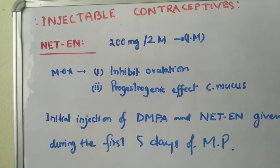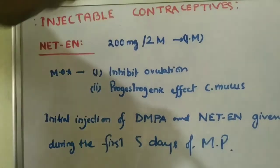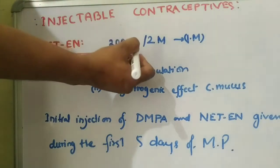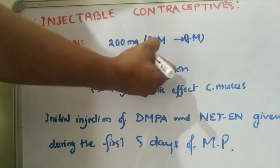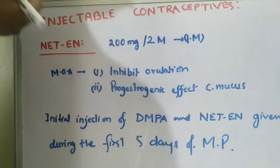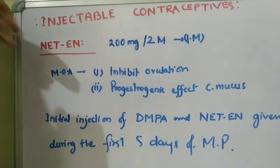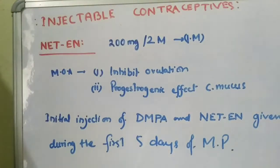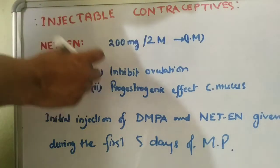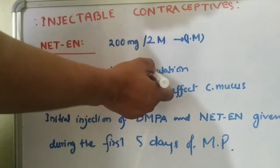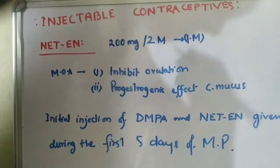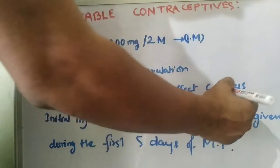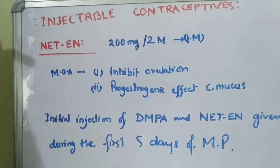The next type is NET-EN. It is basically 200 mg per 2 months, given intramuscularly. Mechanism of action: it inhibits ovulation and has a progestagenic effect on cervical mucus.